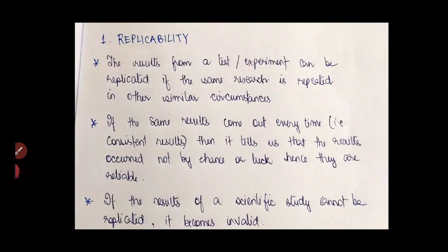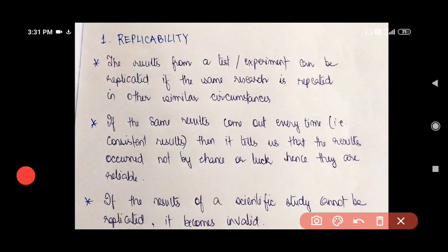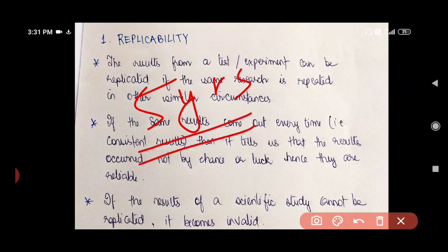First we have replicability. So what in the world is replicability? I'll give you an example. Let us say you conducted a certain research study in a particular area five years ago. Five years down the line, today I, who happen to be a researcher wants to conduct that same research that you carried out, the same research that you conducted five years ago.